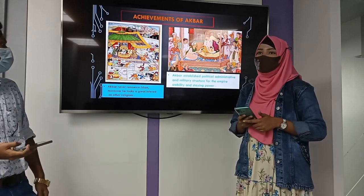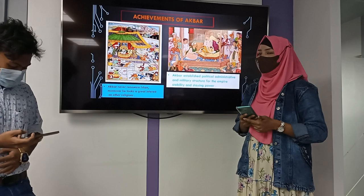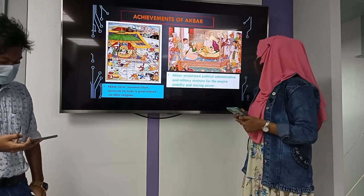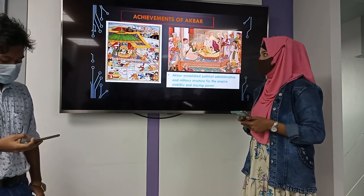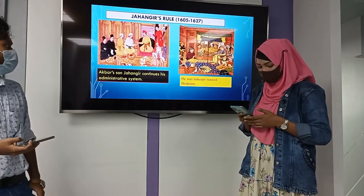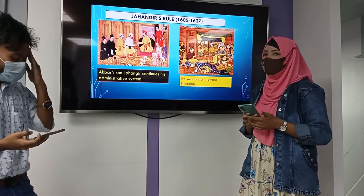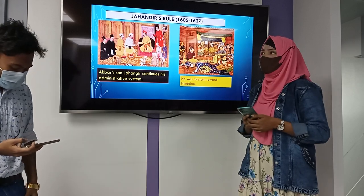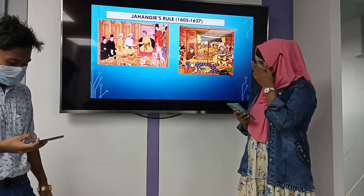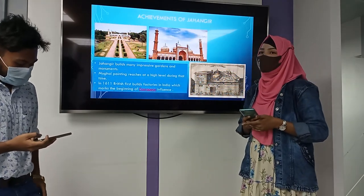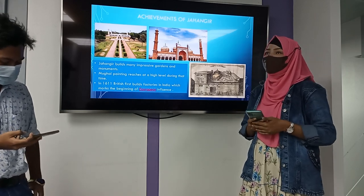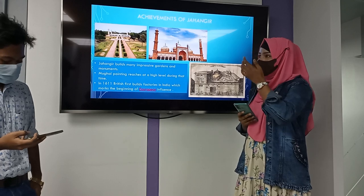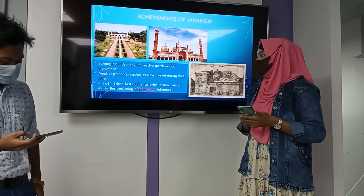Achievements of Akbar: Akbar never renounced Islam, but he took a great interest in other religions. Akbar established a political, administrative, and military structure for the empire's stability and staying power. Jahangir's rule started in 1605 and ended in 1627. Akbar's son Jahangir continued his administrative system and was tolerant towards Hinduism. Jahangir gave many impressive gardens and monuments. Mughal painting reached a high level during his time. In 1611, the first British factories were established in India, marking the beginning of European influence.